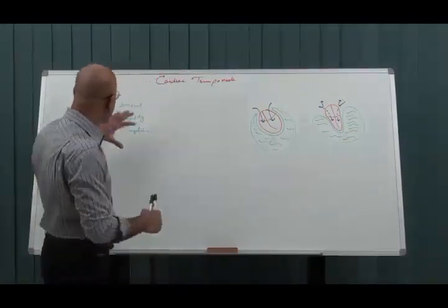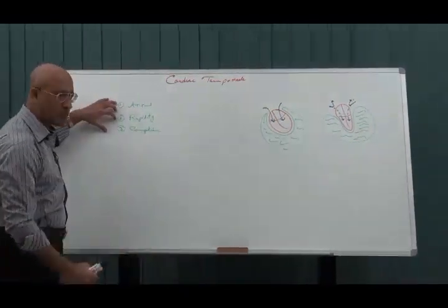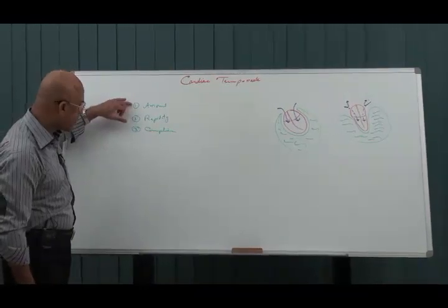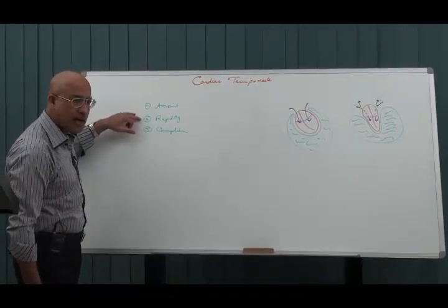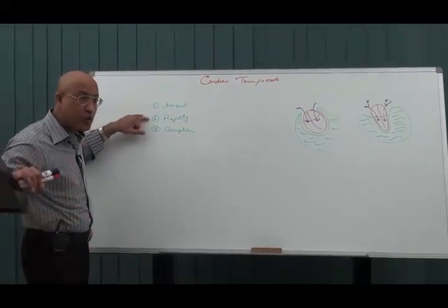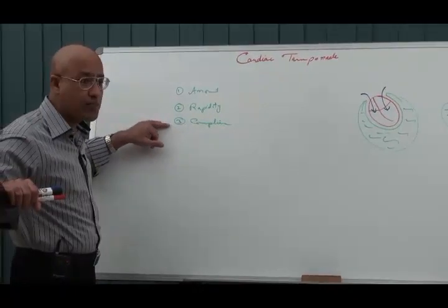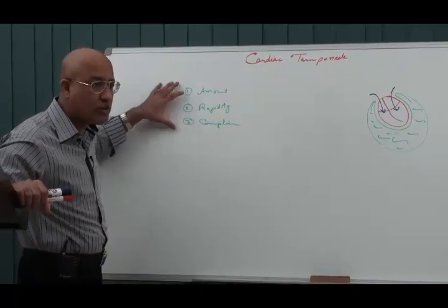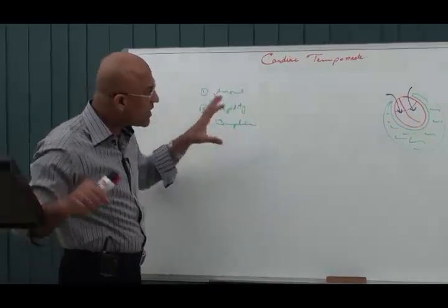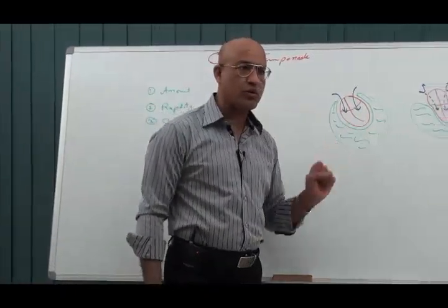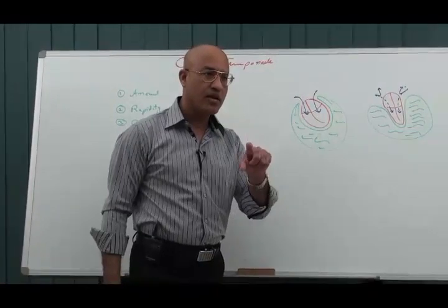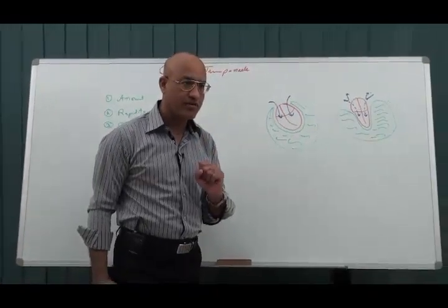The third factor is compliance, which is a measure of stretchability. If the pericardium is very stiff, very little fluid will produce tamponade. If it is stretchable, even a larger amount of fluid may not raise pressure significantly. Amount, rate of accumulation, and compliance interact with each other. What ultimately matters is intrapericardial pressure.